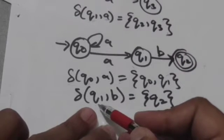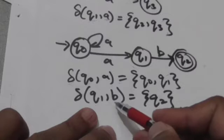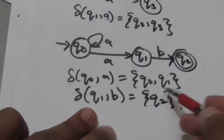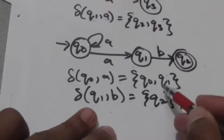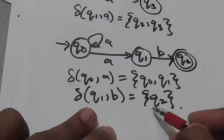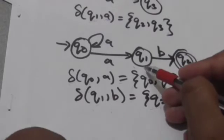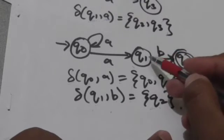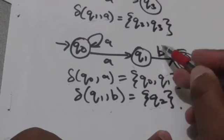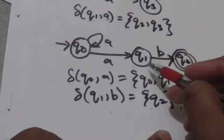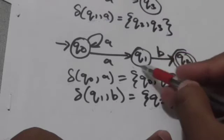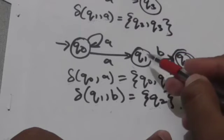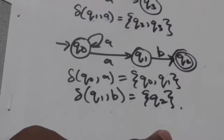Now let's find the transition of Q1 for input symbol B. The output of the transition function for state Q1 on input symbol B will be a set having only one state, that is Q2, because there is only one transition from state Q1 for input symbol B, and that is to state Q2.